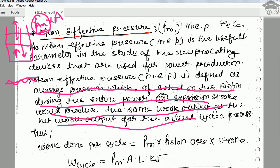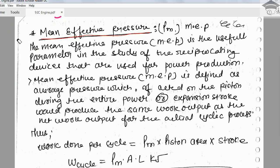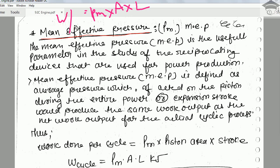Work done in general is equal to mean effective pressure into area into some displacement. Here the displacement is the stroke, because pressure into area is force, and force into displacement is work done. So work done per cycle equals mean effective pressure Pm into area A into stroke length L.